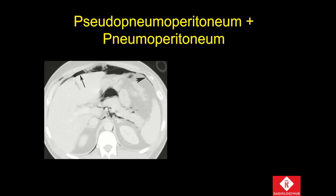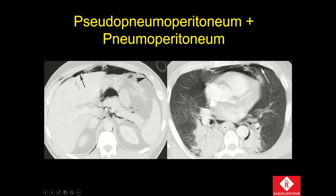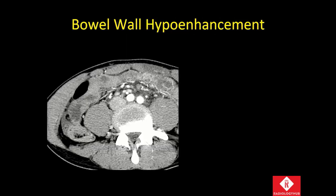Another patient demonstrates both pseudopneumoperitoneum and a true pneumoperitoneum outlining the liver surface, and there is also a pneumothorax present in this patient.